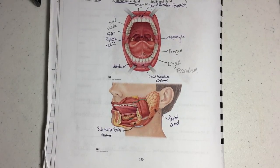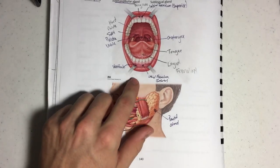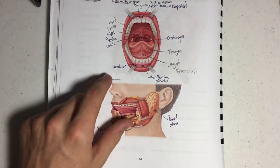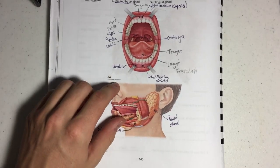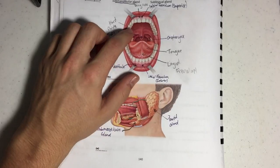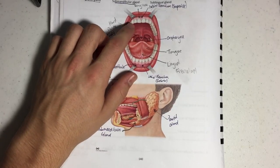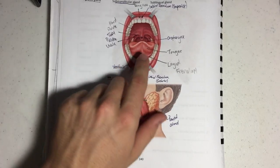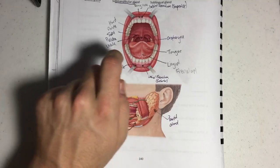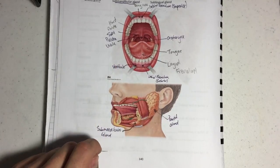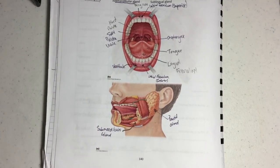The mouth can also be called the buccal cavity, and then as you move right inside, the vestibule — just like the nasal vestibule. At the top of the mouth you have the hard palate, and as you move back on the roof of the mouth it turns into the soft palate, and then the little thing that hangs down is called the uvula.